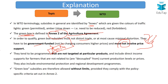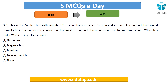Green box subsidies are those programs not targeted at particular products. They include direct income supports to farmers that are not related to current production levels or prices. They also include environmental protection and regional development programs. You can relate these boxes to traffic lights: green means go, amber means slow down, and red means stop.